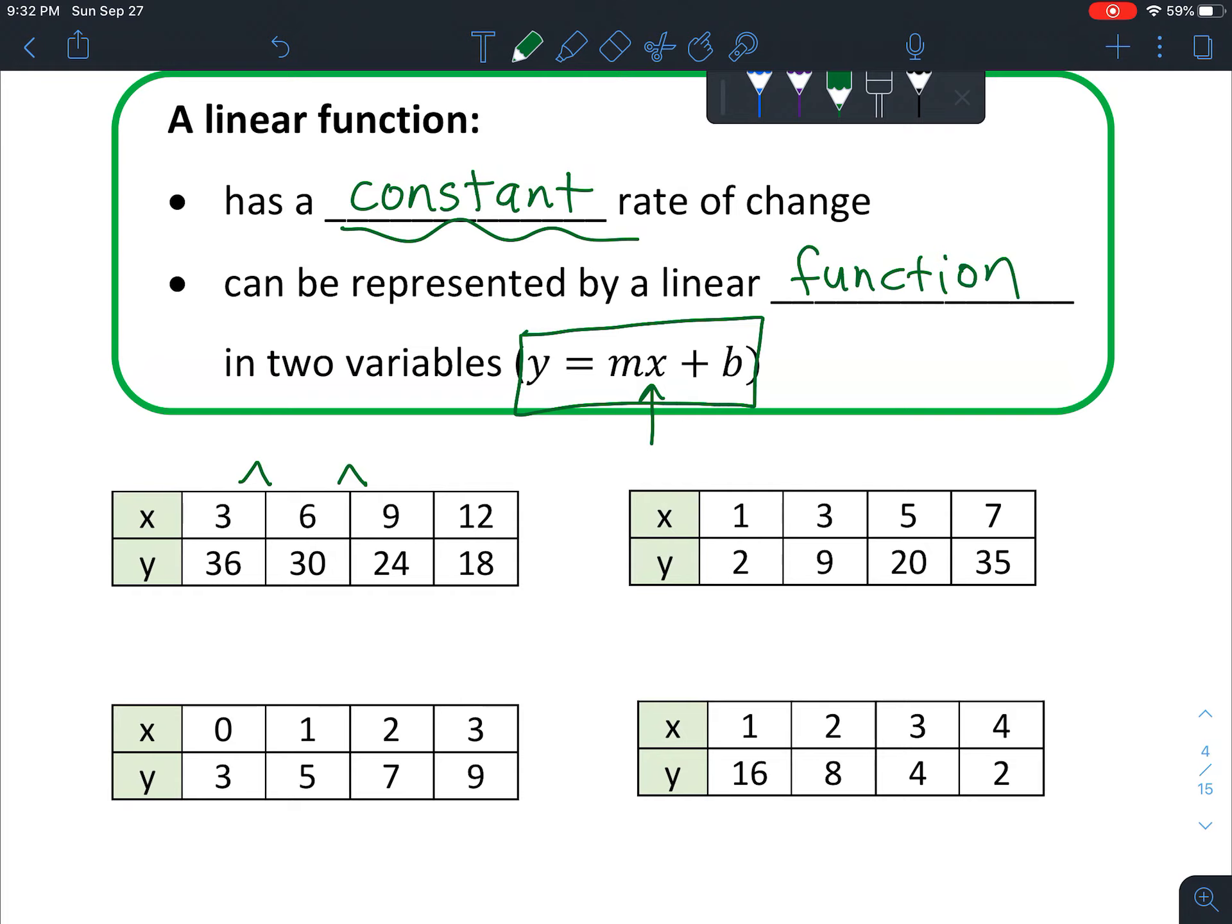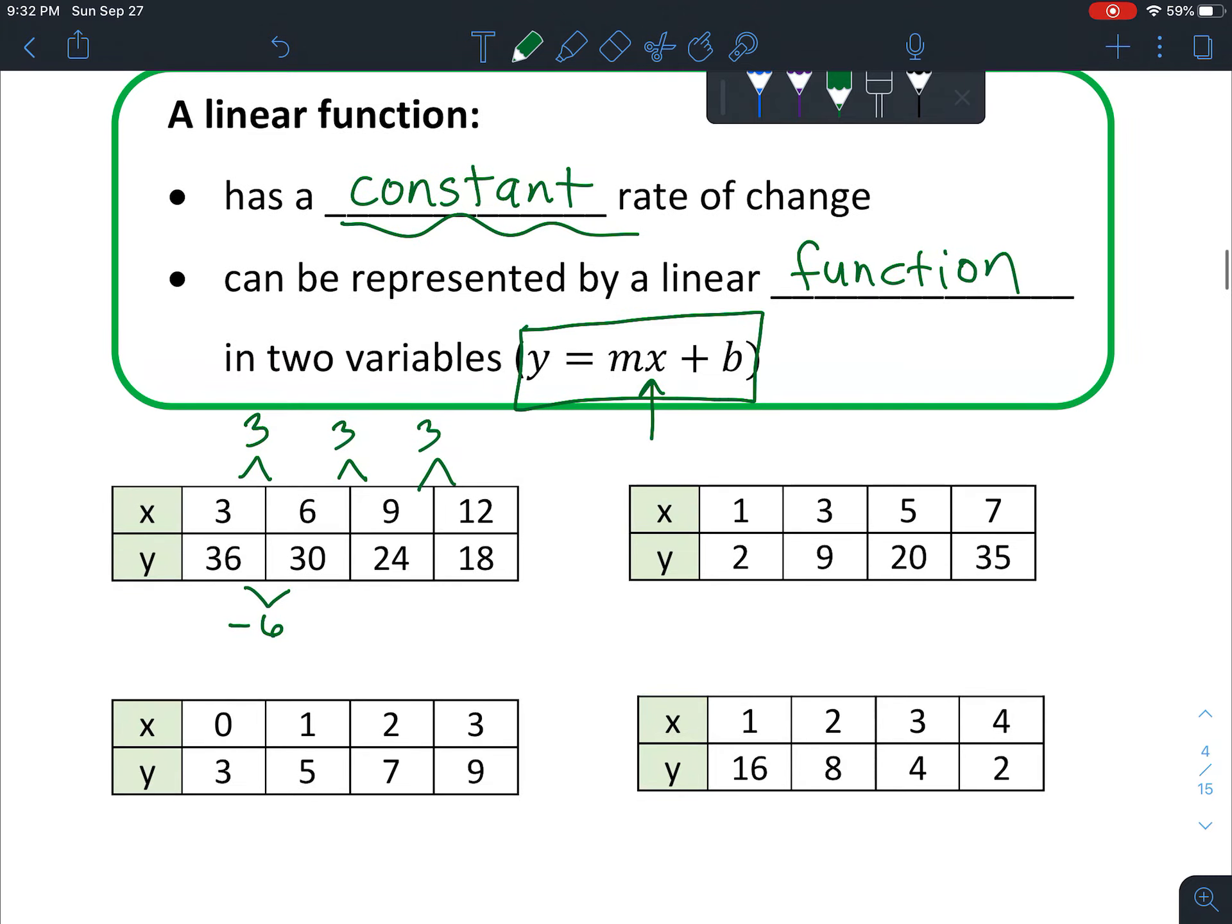You can see that's a constant amount we're adding each time. Let's check the y values. It looks like this time we're subtracting 6 because 36 minus 6 is 30. You can always take the number on the right and subtract the number on the left, so 30 minus 36 equals negative 6. Let's check the next one: 24 minus 30 is also negative 6.